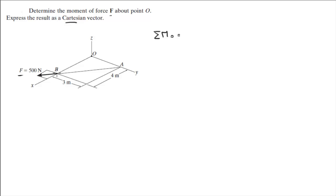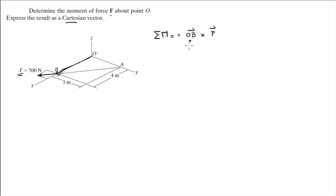...at B, then what you need to do is get vector OB — which is this vector right here — and do the cross product of OB and the Cartesian vector form of the force. The first is the position at which the tail of the vector goes. If you flip them around you get a different answer, and a wrong answer.